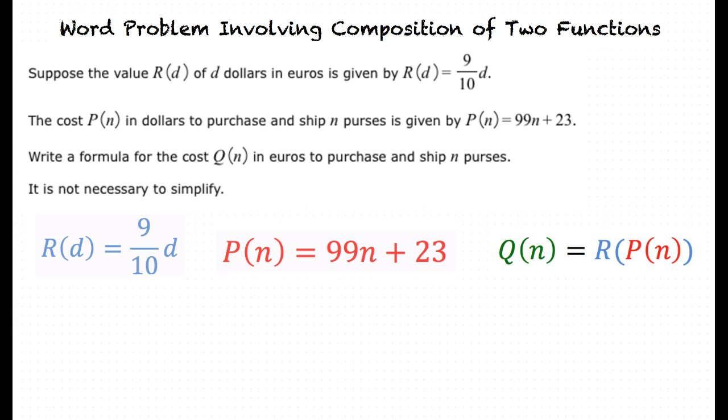Okay, so now do we use the expression p of n to replace variable d in the equation r of d equals 9 over 10 times d? That's right. This will give us q of n equals 9 tenths times 99n plus 23.